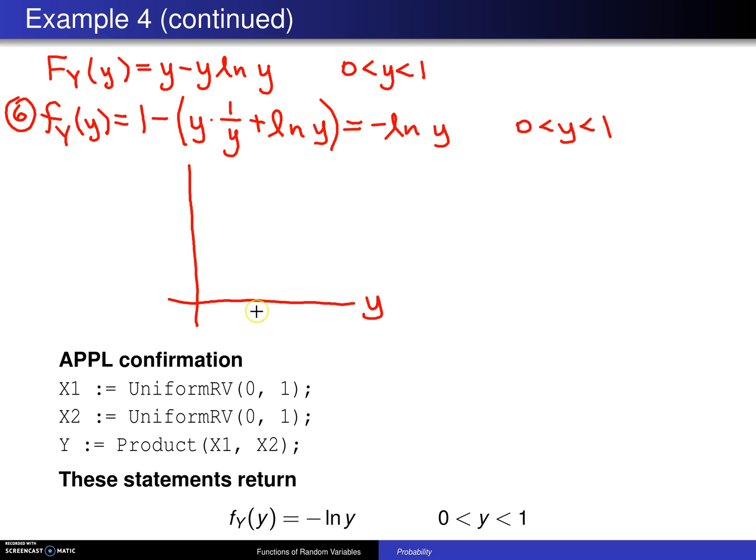If I were to draw a picture of this probability density function, here is y. Support goes from 0 to 1. Here is f_Y(y). And the probability density function looks something like this. Now is there an intuitive explanation for why so much of this is being pushed into the left part of the support, and there is.